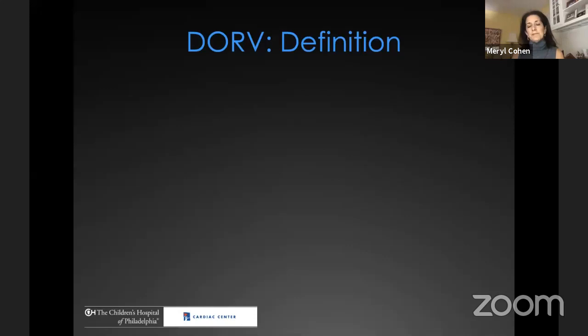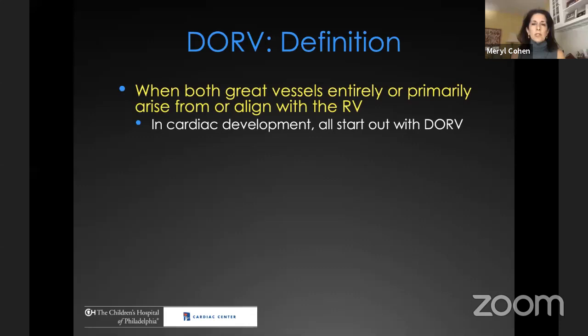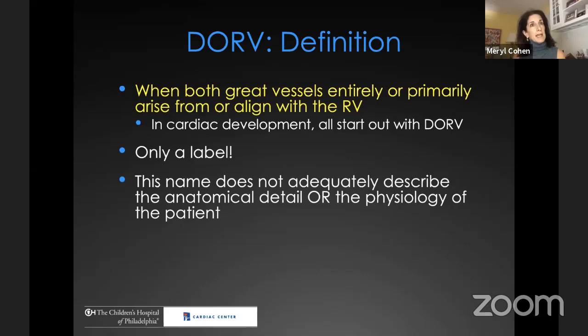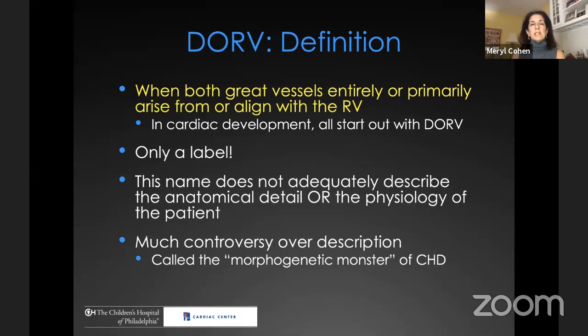This shows the challenge of using two-dimensional imaging to image a very three-dimensional structure. The definition of double outlet right ventricle is when both great vessels entirely or primarily arise from or align with the right ventricle. In cardiac development, all hearts start out with double outlet right ventricle, and eventually the aorta wedges between the mitral valve and the ventricular septum. It's important to understand that double outlet right ventricle is only a label — it does not adequately describe anatomical detail or physiology. There is tremendous controversy, particularly Van Praagian versus Andersonian, earning it the name 'morphogenetic monster.'